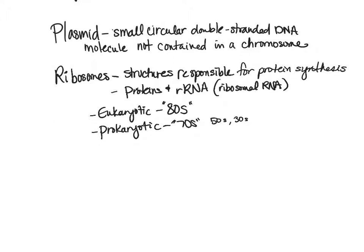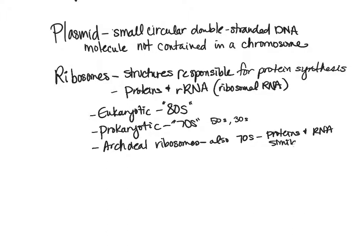Whereas all cells have ribosomes, the specific ribosomes differ. Archaeal ribosomes are also 70S, but their proteins and RNA are more similar to eukaryotic organisms than to bacteria. So archaea are more similar to eukaryotic organisms in many ways than they are to other prokaryotic organisms like bacteria.